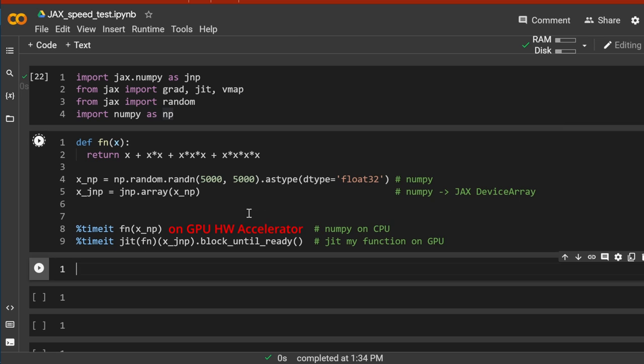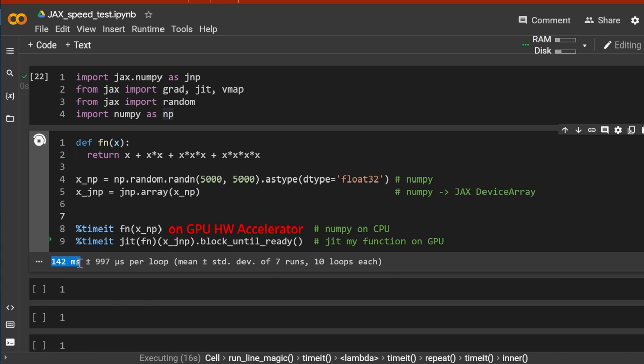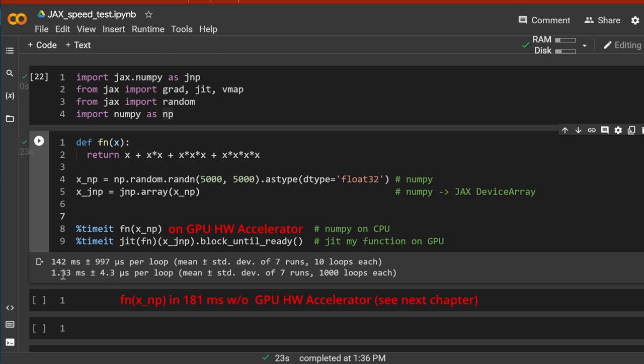So now let's have a look at the speed difference we can achieve. The first on a CPU, second on a GPU. And then imagine about a TPU. So here we go. The first NumPy on CPU takes about 142 milliseconds per loop. And then the optimized JIT with XLA compiler version is at 1.3 milliseconds. So from 142 to 1.